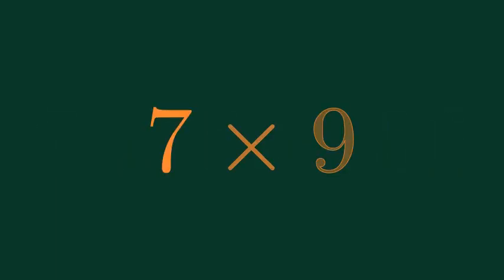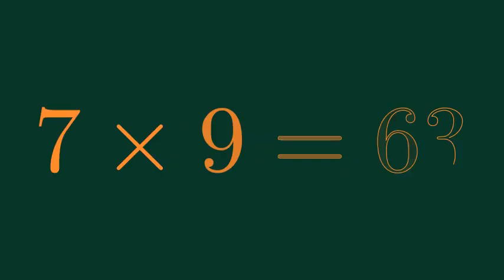What is 7 times 9? 7 times 9 is equal to 63.